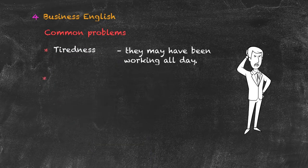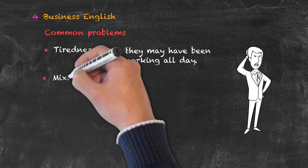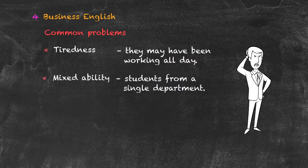Secondly, if the students come to us from a particular department — which is very common, where the whole department comes across for their English lesson at once — then it's very unlikely that all the students within that department are going to be at the same level. So we need to be prepared for mixed ability classes. We cannot present the same information in exactly the same way to all students, so we have to make considerations such as differentiated activities that have varying levels within them.